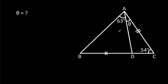In this video, we have been given that AC is equal to BD, angle BAD is 63 degrees, angle ACD is 54 degrees, and angle CAD is theta. We have to find theta.